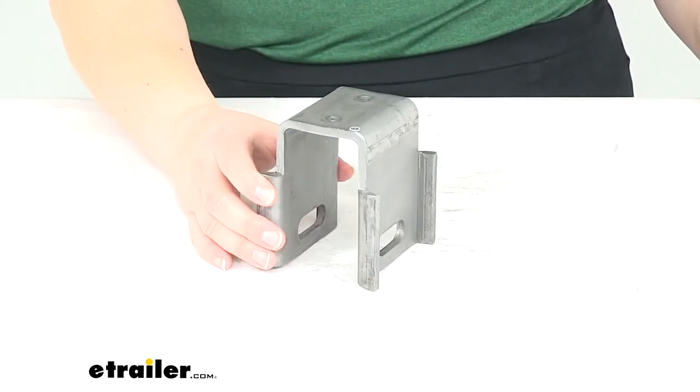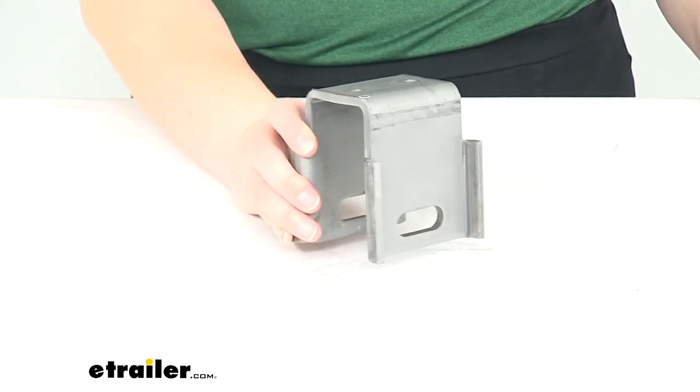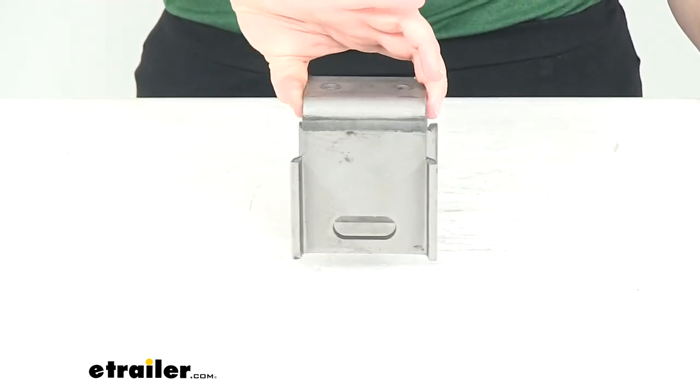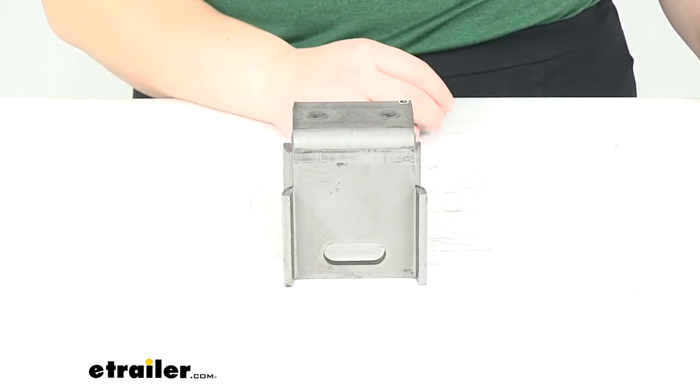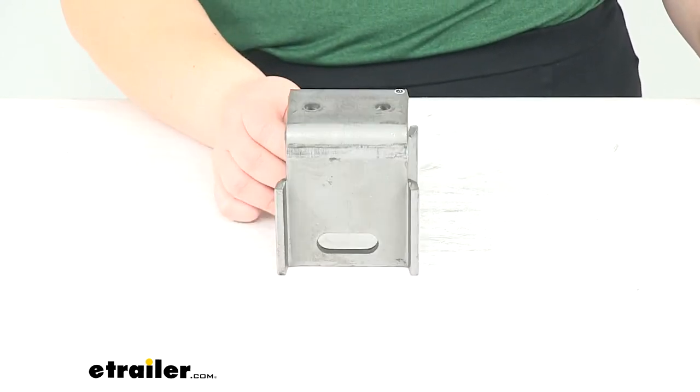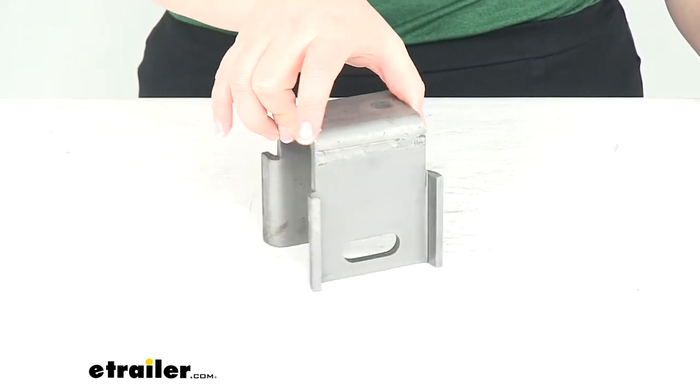This is going to be a replacement for a damaged, broken, or maybe missing Correct Track Axle Hanger that was welded to the frame of your trailer by the manufacturer. So this is going to be a direct replacement for that. It does still have the bare or raw finish to it, so it can still be welded onto your trailer.